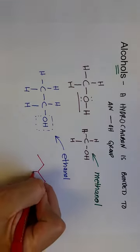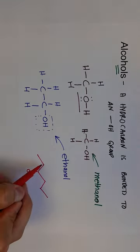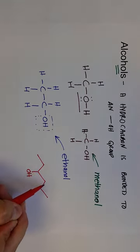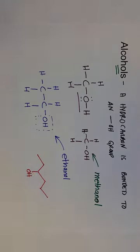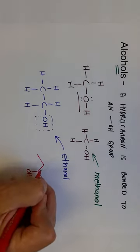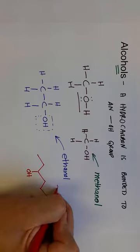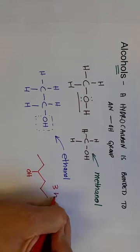So let's say there's an OH group on this carbon. Counting the chain: one, two, three, four, five, six — that's hexane. And that OH group is on carbon three, so this is 3-hexanol.